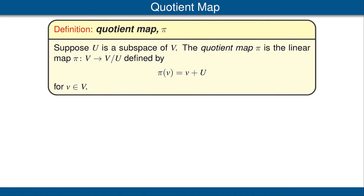Now we define the quotient map, which traditionally is called π. Suppose U is a subspace of our vector space V. The quotient map π is the linear map from V to the quotient space V/U, defined by π(v) = v + U. Our definition of addition and scalar multiplication on V/U ensures that this map π is indeed a linear map.